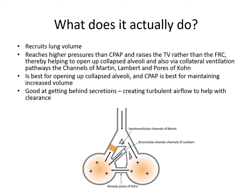Thinking back to university physiology and taking it back to basics, we're looking at the channels of Martin, Lambert, and Pores of Cohn — really getting into the small airways and opening up collapsed alveoli, targeting areas of collapse. Whereas CPAP is more about maintaining volume we've gained, positive pressure delivered through IPPB is more to open up areas of collapse. People quite often don't think about the Bird and IPPB for secretion retention, whereas actually it can be quite useful to get behind secretions and create turbulent airflow to help with clearance. The first thing you do when you have a cough is take a big breath in to get behind secretions, so the Bird can help people who are struggling to take that big breath to generate a strong enough cough.